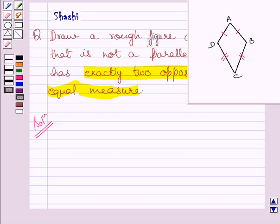Property of kite states that measure of angle B is equal to measure of angle D but measure of angle A is not equal to measure of angle C.